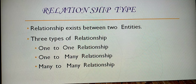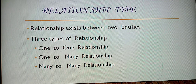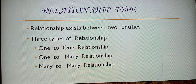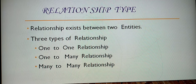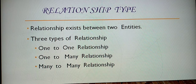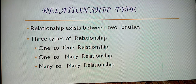Next is the relationship type - the third main heading under ER model. A relationship exists between two entities. There are three types of relationships: one-to-one, one-to-many, and many-to-many.